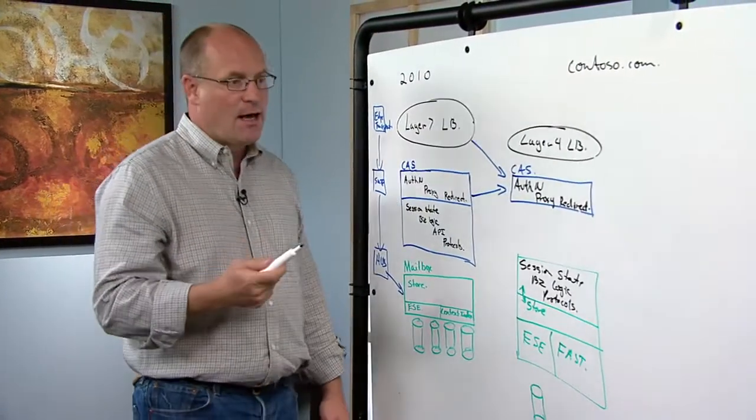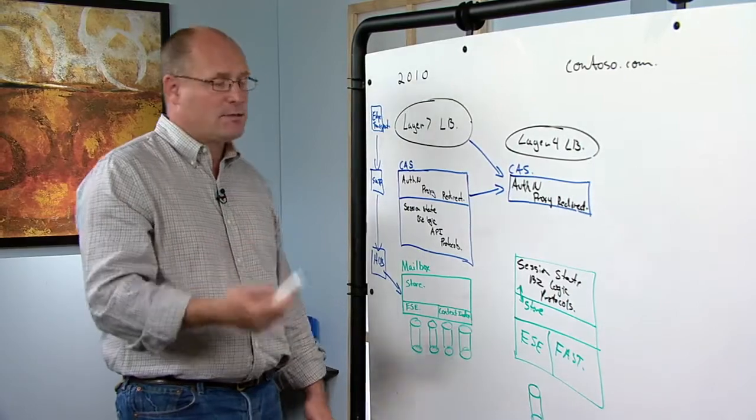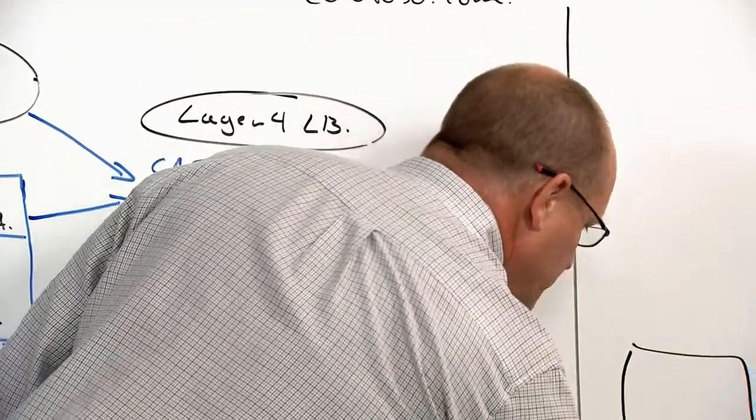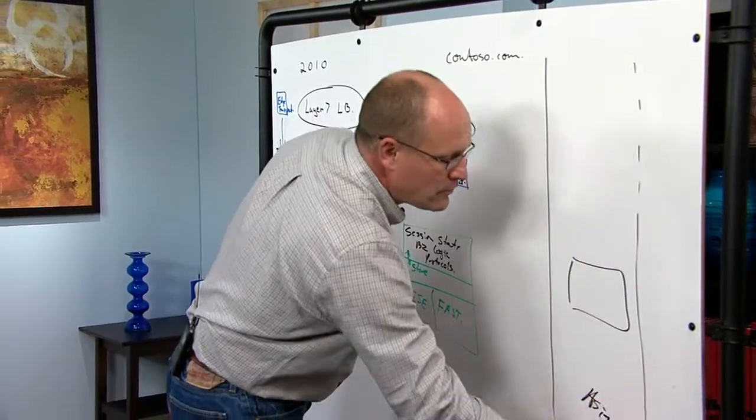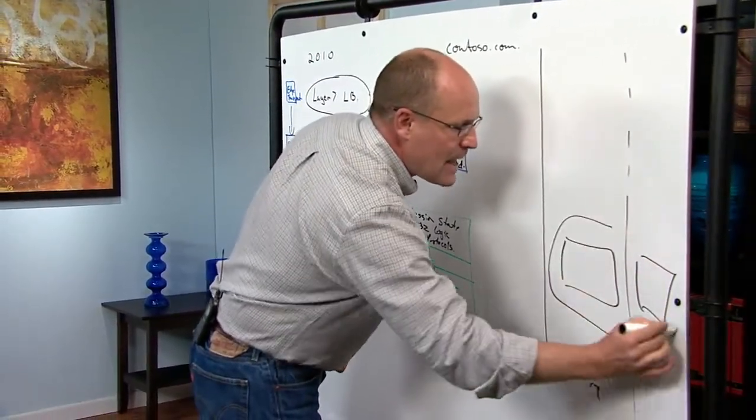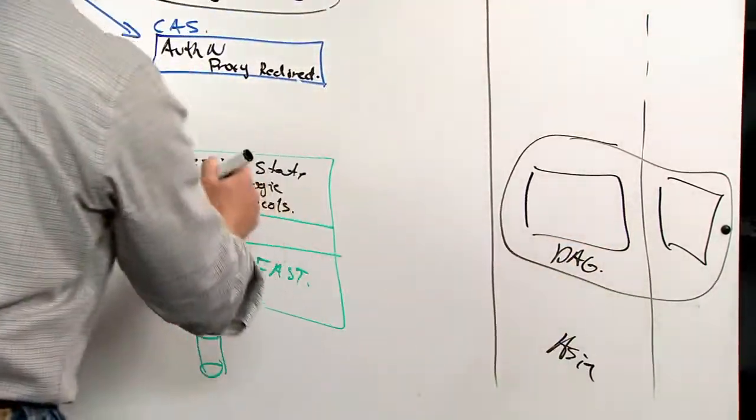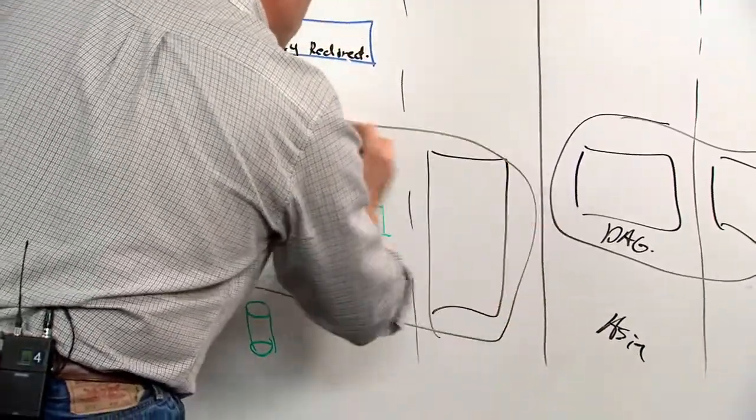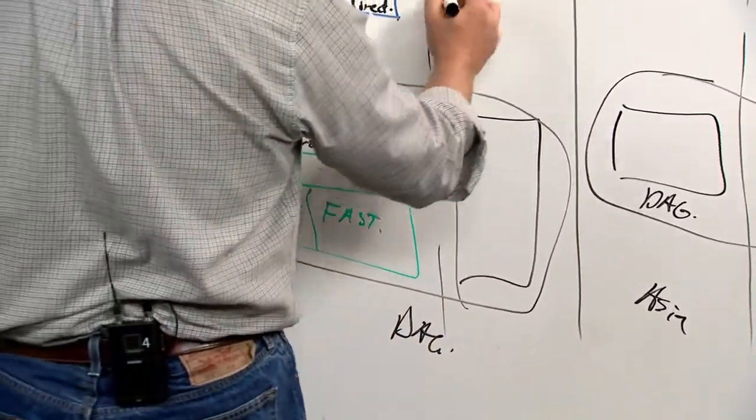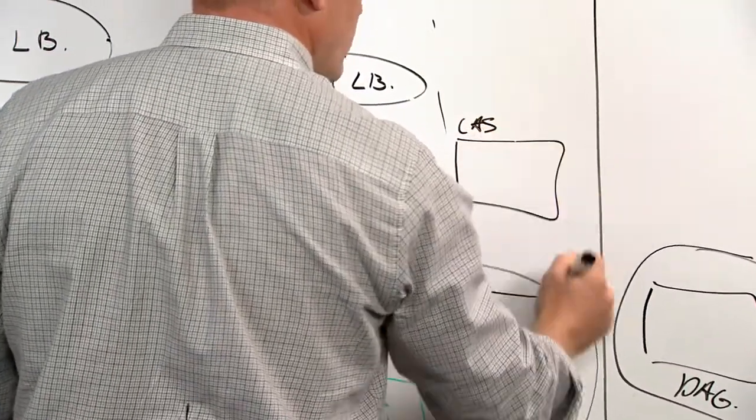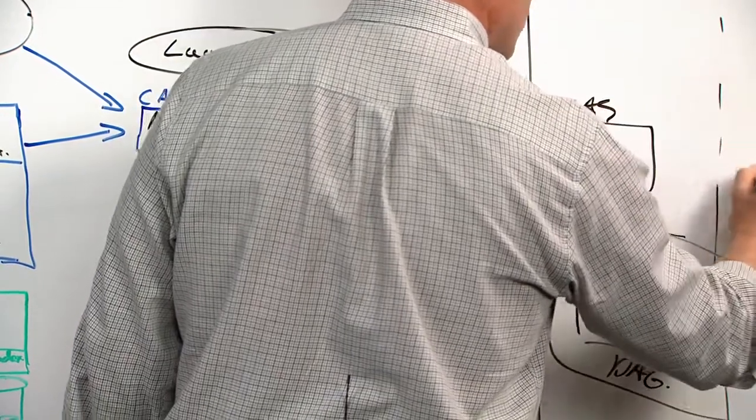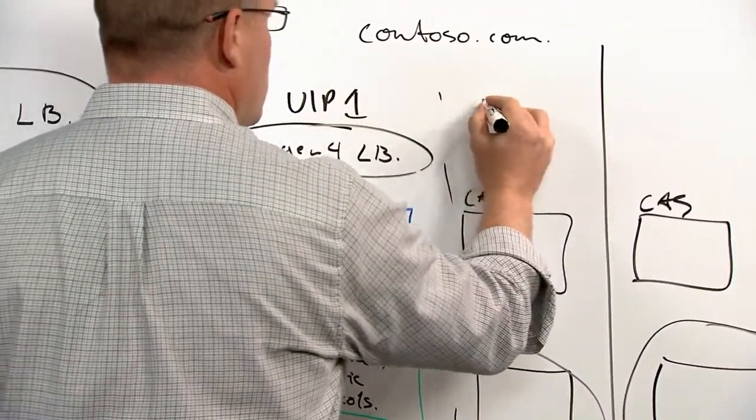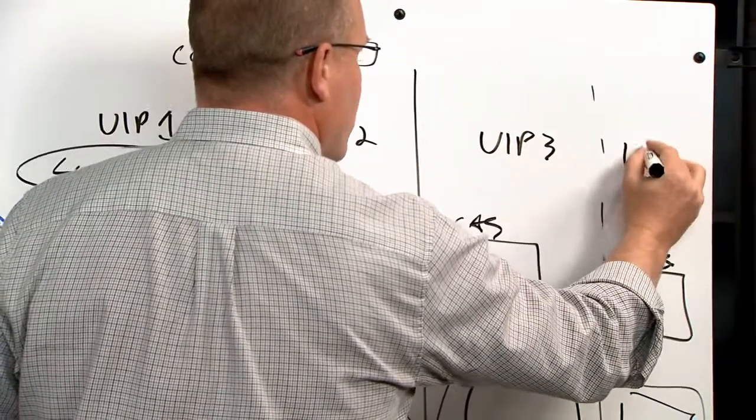For a large company that might have people that are working in multiple continents, you might have a world in which you have mailbox servers in Asia spread across say two different DCs for high availability. These guys are DAG. And in here again, you've got mailbox servers spread across multiple sites here. And in each of these sites, of course, you're going to have your own CAS array in both sites.